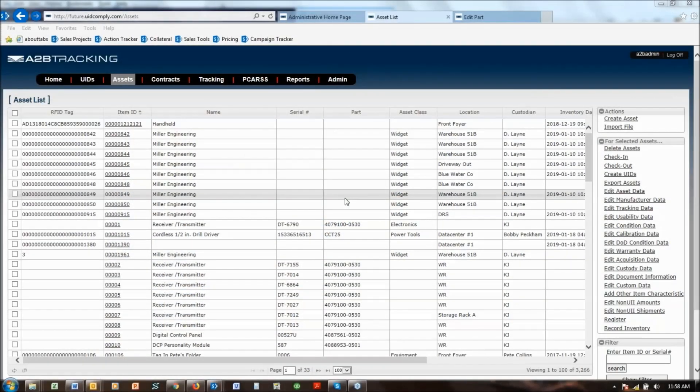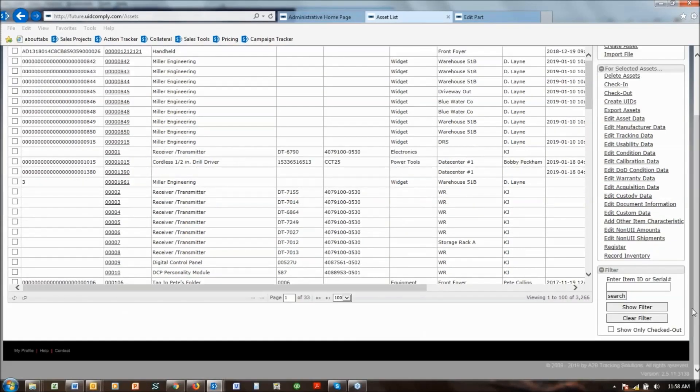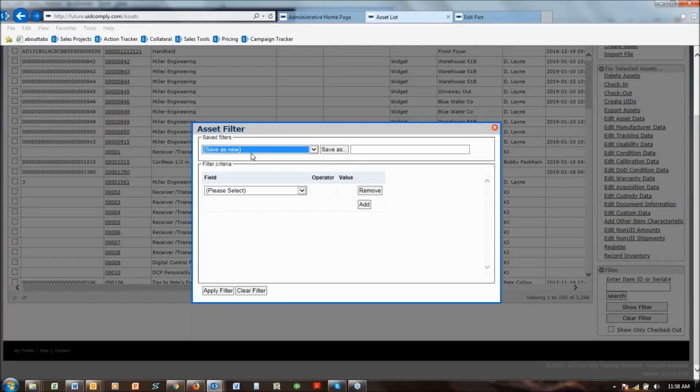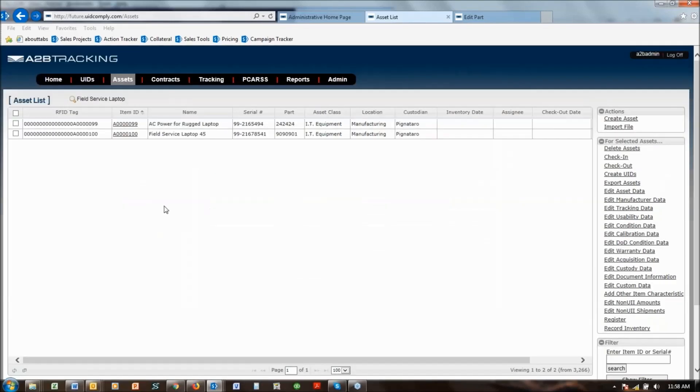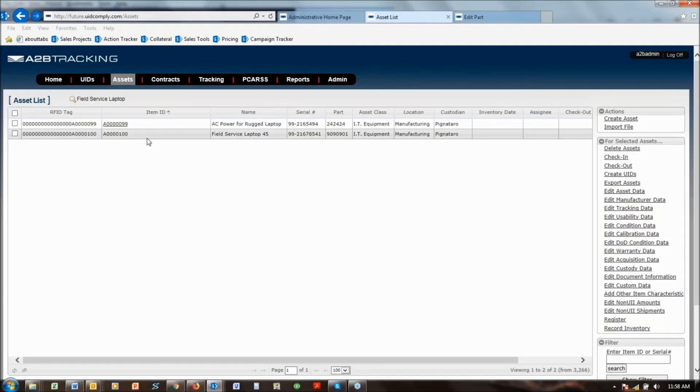Here I've gone into the A to B tracking cloud app on a desktop computer and I want to find the assets that are in the manufacturing area so the field service technicians can go out and perform their functions. What I do is I begin by scrolling down and I want to actually filter all of the thousands and thousands of assets down to just a few. So in this case I've got a predefined field service laptop where I can apply that filter and look for just a couple of assets that I'm seeking to find in the warehouse.